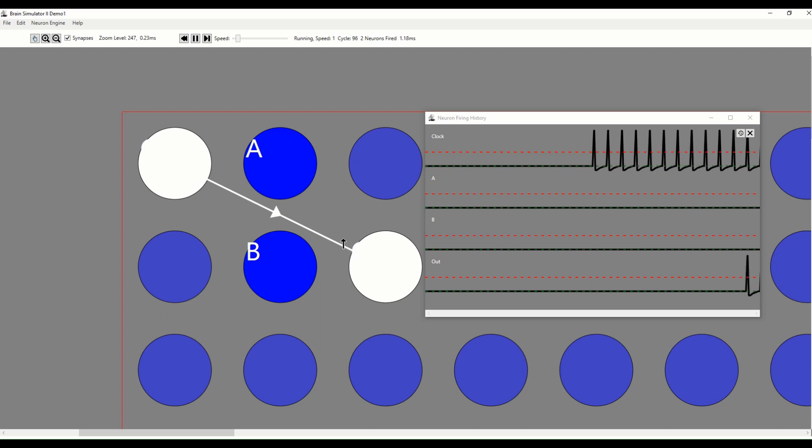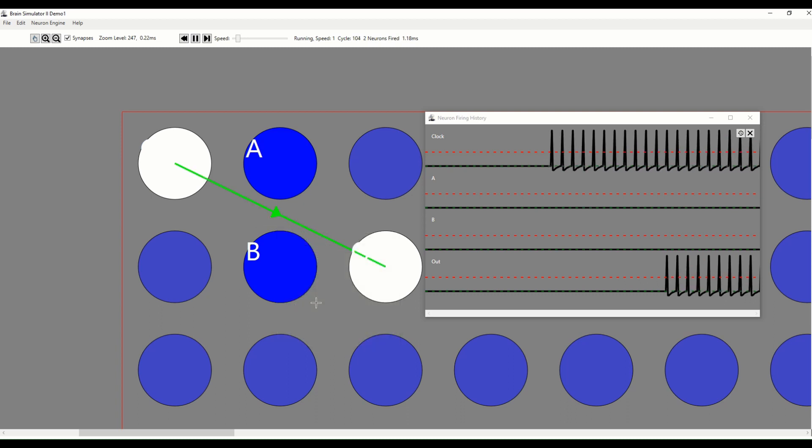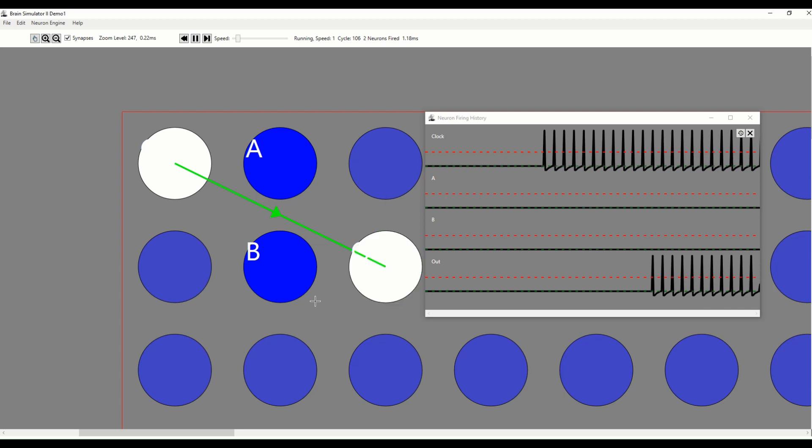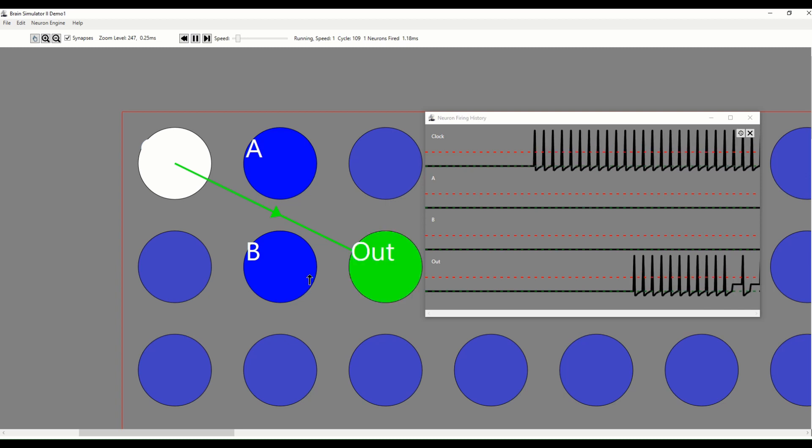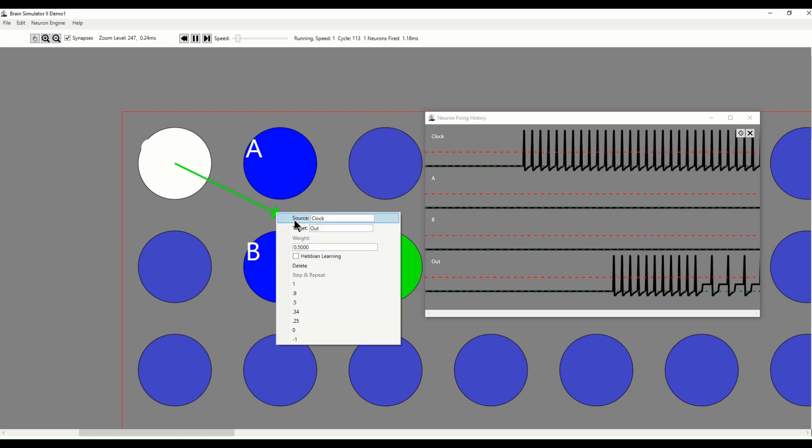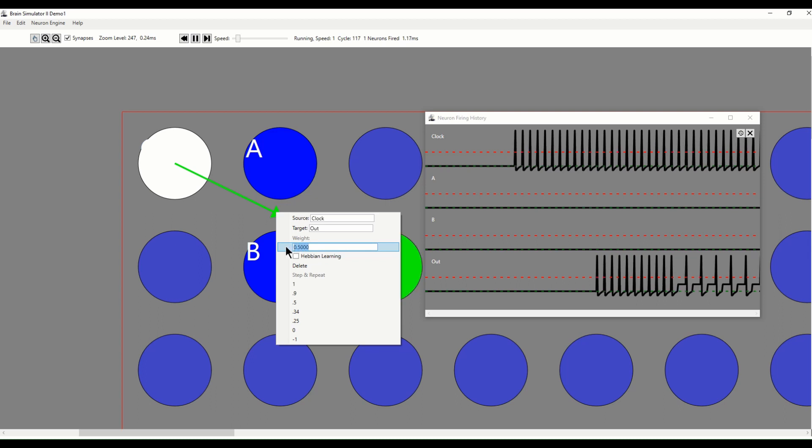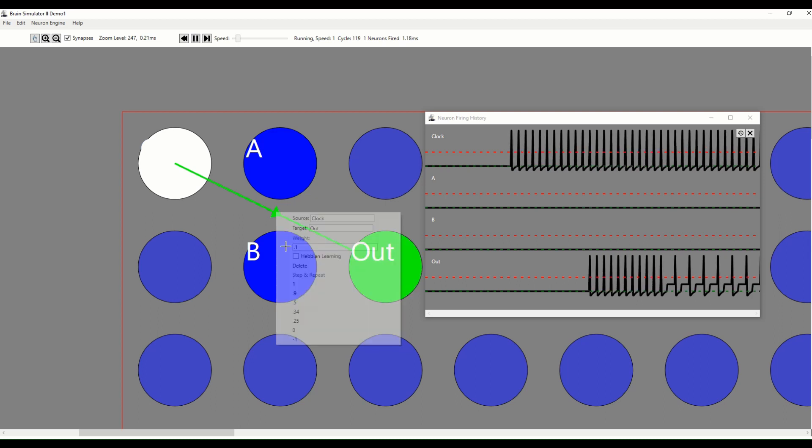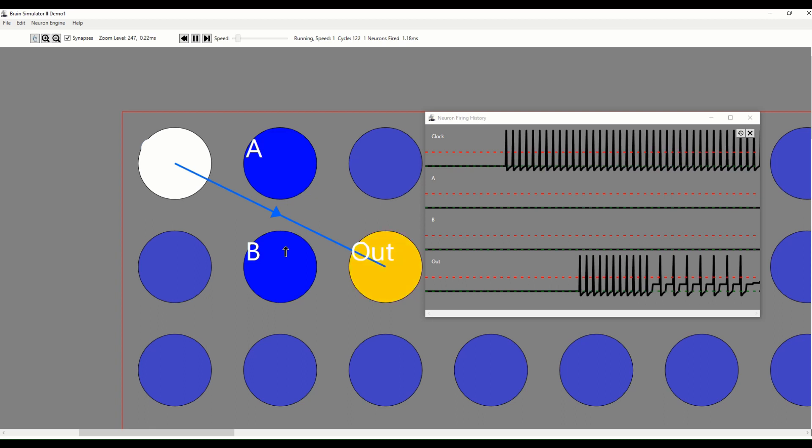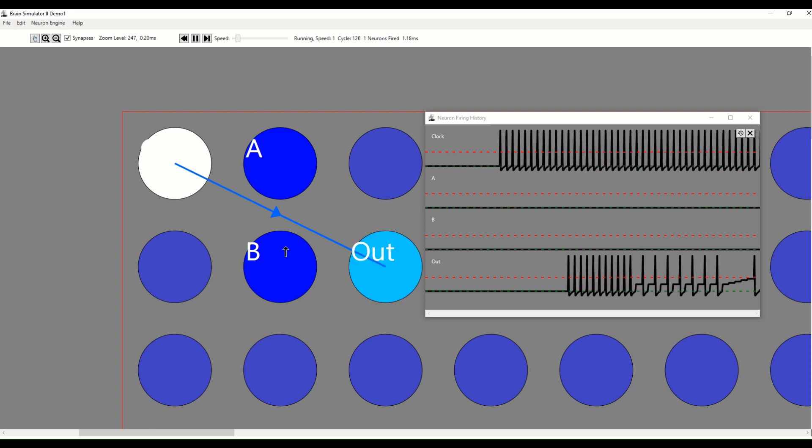Initially, the weight of that synapse is 1. So the out neuron fires whenever the clock neuron fires. Let's change the synapse weight to 0.5 and notice that the out neuron fires once every other clock spike. Now we'll set that synapse weight to 0.1 and you can see the internal charge or membrane potential of the neuron slowly increases until it reaches the red dash threshold. Then the out neuron spikes and resets.